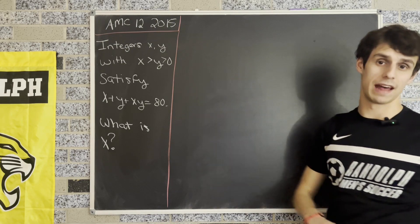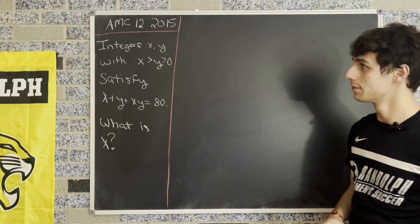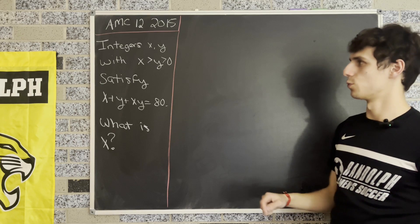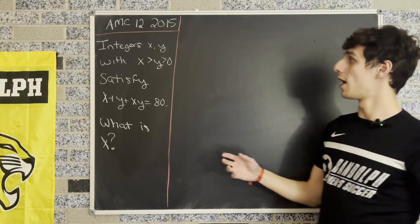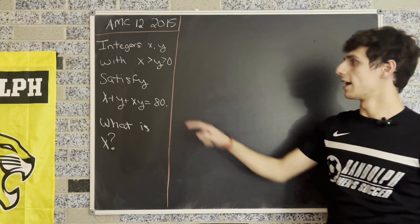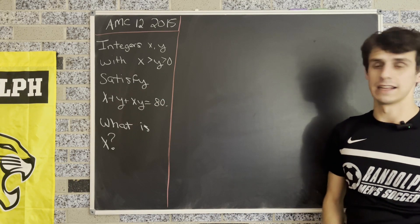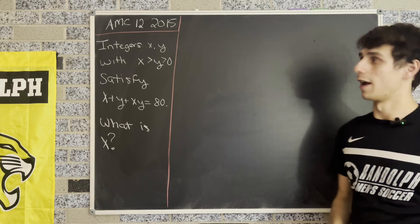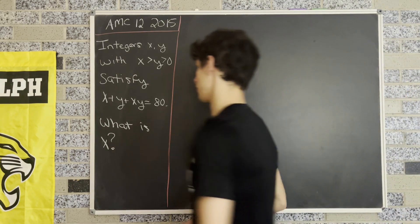Today's math puzzle comes from the AMC12 math competition in the year 2015, and it tells us that integers x and y, where x is greater than y, which is greater than 0, satisfy the following equality, where x plus y plus x times y is equal to 80. And it asks us to solve for x here. So let's go ahead and jump into this.